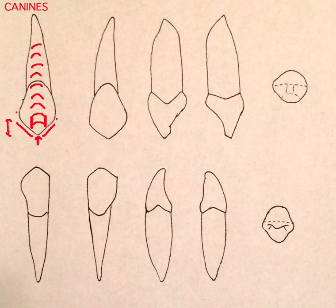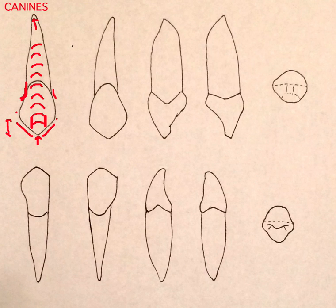One of the most important features of this tooth is the distofacial concavity, which we'll talk about in a little bit. There's also a little bit of a concavity on the mesial side as well. The root continues pretty straight and parallel, and the root tip classically points in the distal direction.